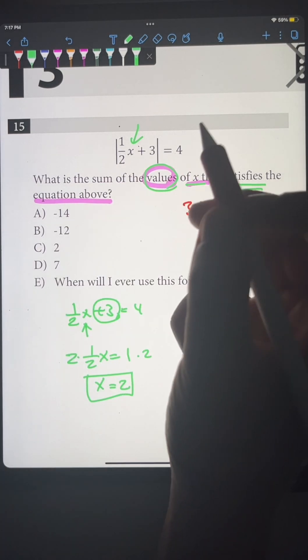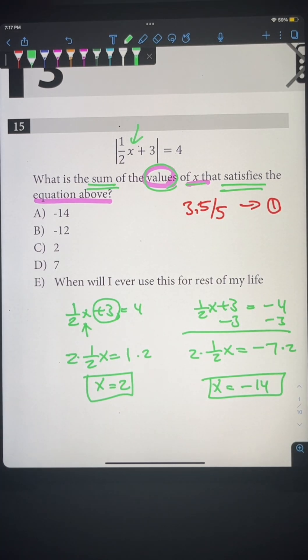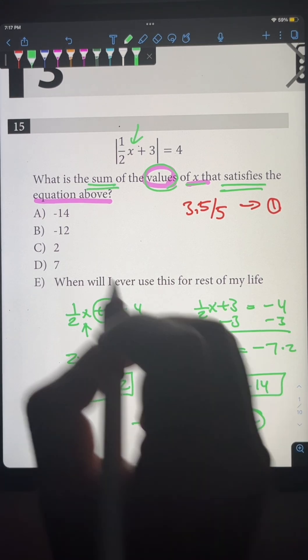So these are the two values, and the question is asking for the sum of the values, right? So -14 + 2 equals -12, and our answer is choice B.